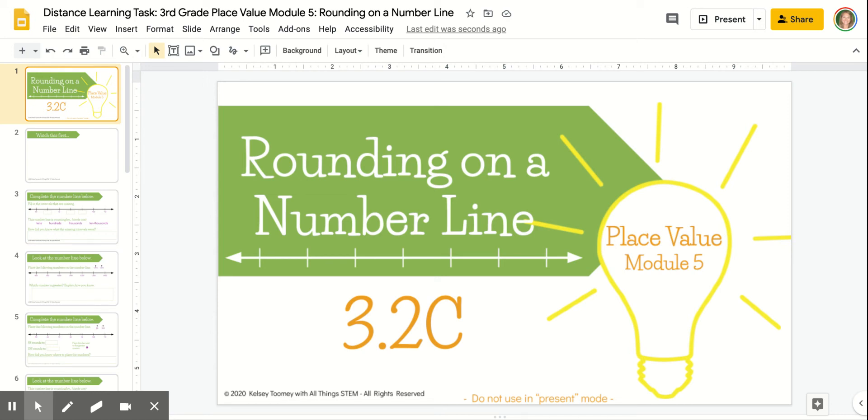Hey there, welcome to module five of our place value series. In this module, we're going to look at how we can place certain numbers on a number line and use that number line as a tool to round numbers to the nearest multiple of 10.